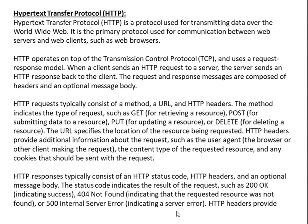HTTP requests typically consist of a method, a URL, and HTTP headers. The method indicates the type of request, such as GET for retrieving a resource, POST for submitting data to a resource, PUT for updating a resource, or DELETE for deleting a resource. The URL specifies the location of the resource being requested.